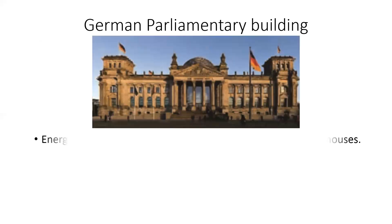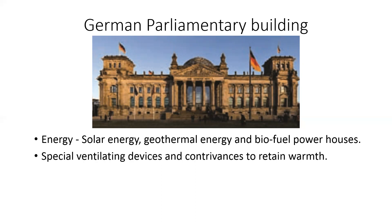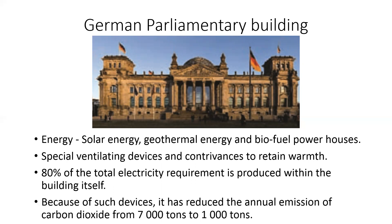Now we will refer to the German parliamentary building. Here energy is obtained from solar energy, geothermal energy, and biofuel powerhouses. There are special ventilation devices to retain warmth. 80% of the total electric requirement is produced within the building itself, reducing the annual emission of carbon dioxide from 7,000 tons to 1,000 tons.